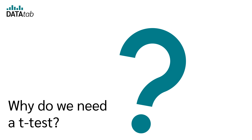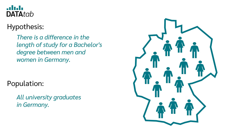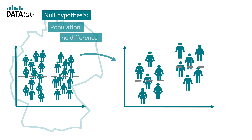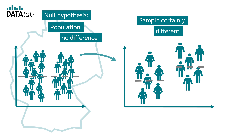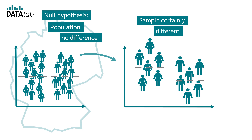Before we look at how the t-test is calculated, let's consider why we actually need one. Suppose we want to know if there is a difference in the length of study for a bachelor's degree between men and women in Germany. Our population is all bachelor graduates who studied in Germany. Since we cannot survey all of them, we draw a representative sample. We use the t-test to test the null hypothesis that there is no difference in the population. Even if no difference exists in the population, we will still see some difference in the sample — it would be very unlikely for the difference to be exactly zero. The t-test tells us at what difference, measured in a sample, we can say the duration of study is significantly different.